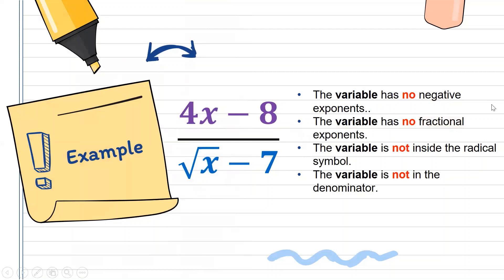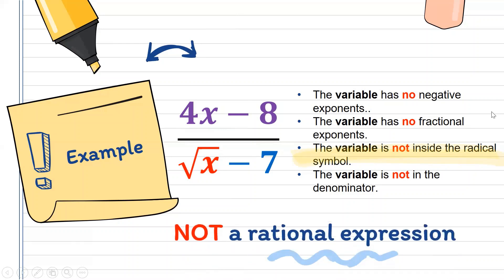Next example: 4x minus 8, all over square root of x minus 7. The exponents are all positive — condition 1 met. No fractional exponent — condition 2 met. However, checking the third condition, the variable x is inside the radical symbol in the denominator. Therefore, the third condition has not been met, and this example is not a rational expression.